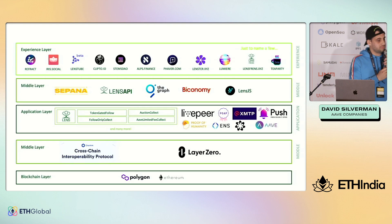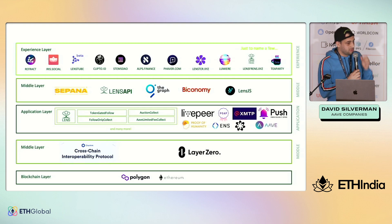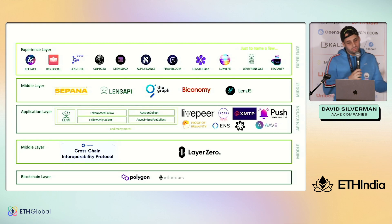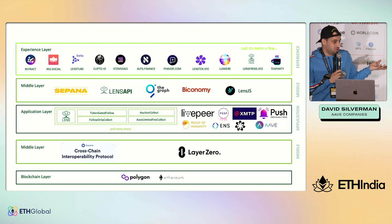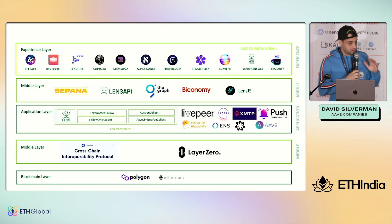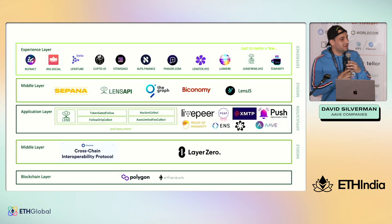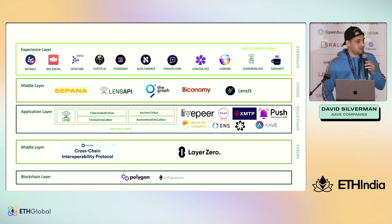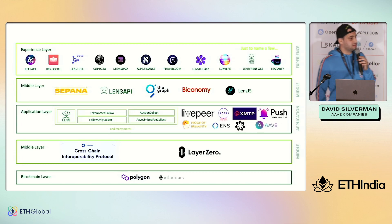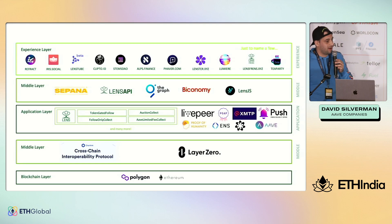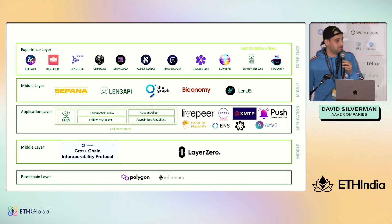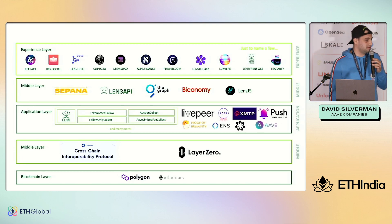Folks from Developer DAO have built a subgraph that you can query. We also recommend that you use our API — it is open, there is no key and no account needed to query it, and it is able to stay up to date much faster than a traditional subgraph to allow you to get real-time information from the social graph itself.